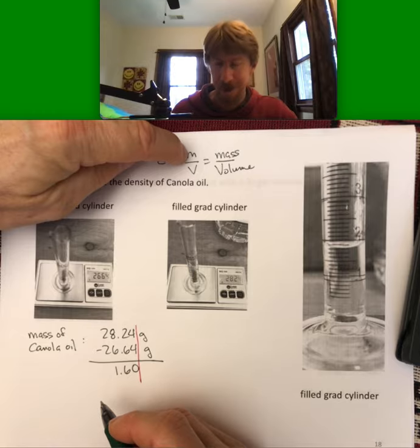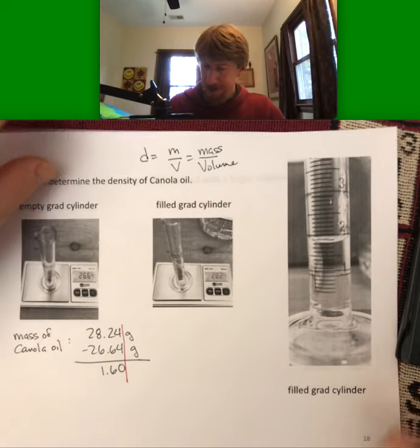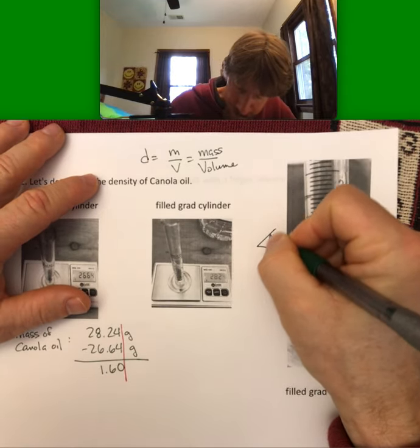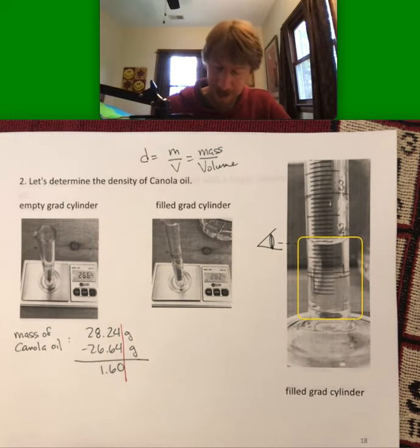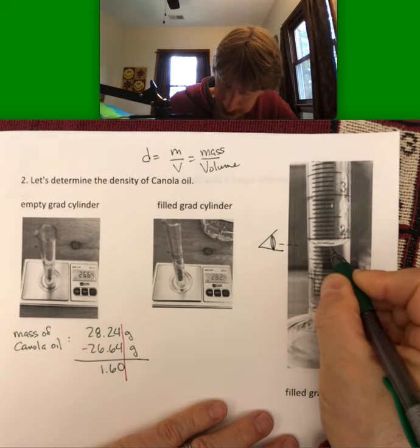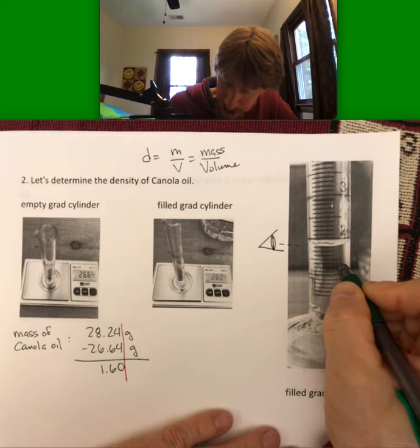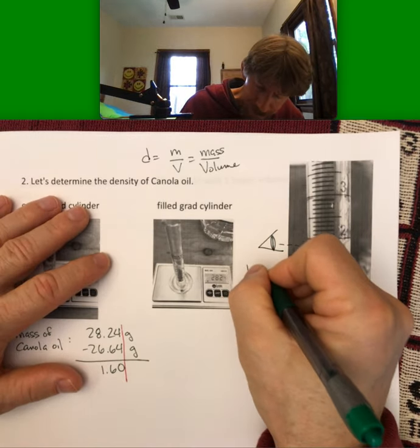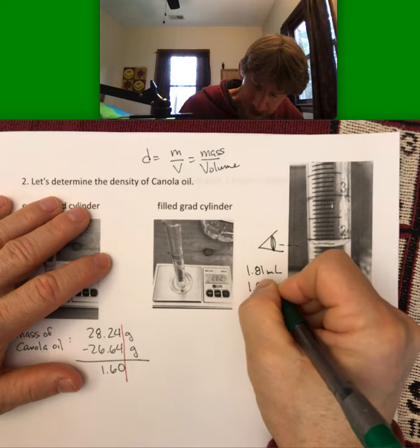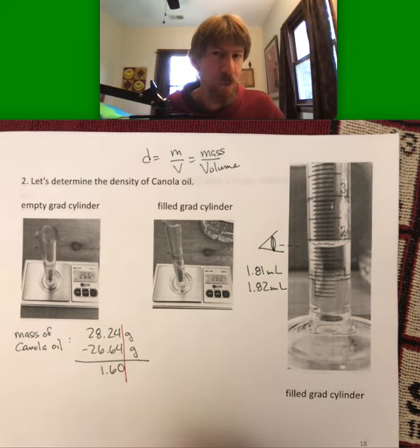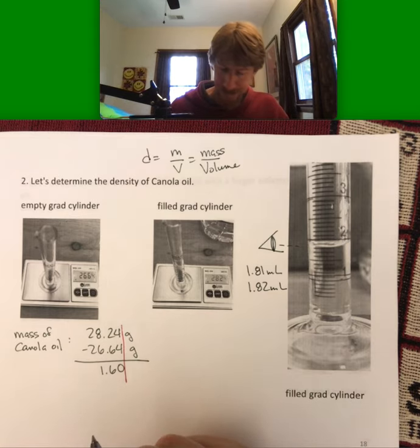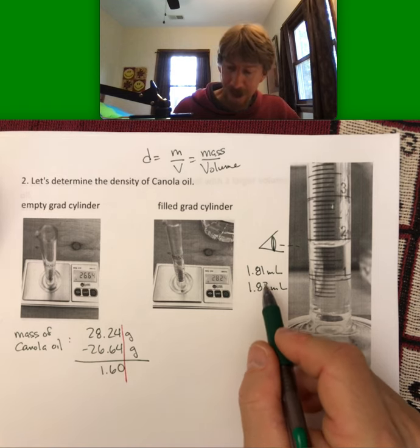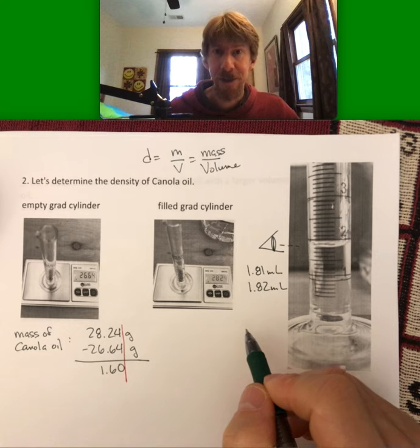That's going to go in the numerator. The volume of canola oil is - we're looking straight across. I took my photo straight across, and the meniscus, the bottom of the meniscus is right there. Let's see, 1, 1.5, 1.6, 1.7, 1.8. I'm going to go with 1.81 milliliters. You could go with 1.82 milliliters as well. I don't think you can go with 1.80 - it is above that line. There are multiple correct answers within the experimental error or uncertainty for this calculation.